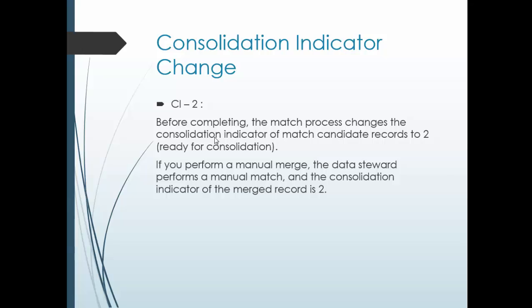During an interview the question might be asked: how does the consolidation indicator change during the manual merge process? In a manual merge, the record will be in the manual queue with consolidation indicator 4. We manually check whether the record is matching based on business requirements. Once we merge that record, the consolidation indicator of such a record will be 2, not 1.